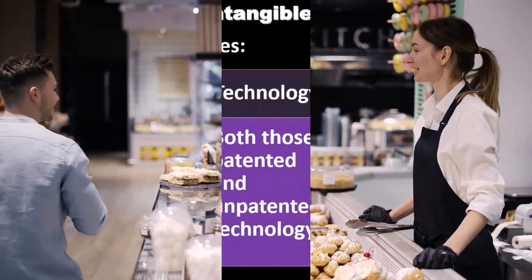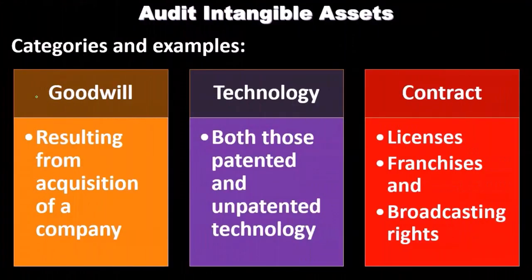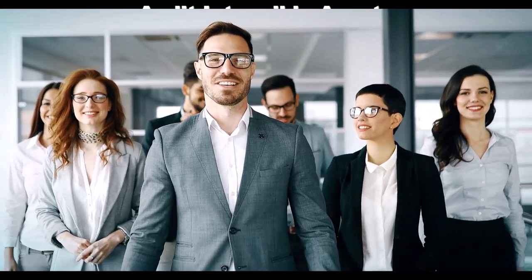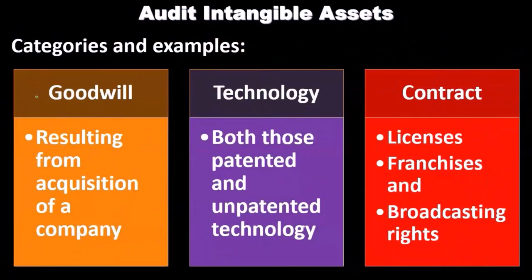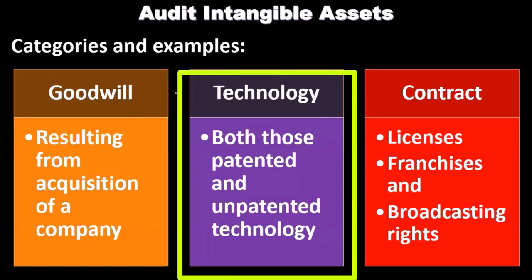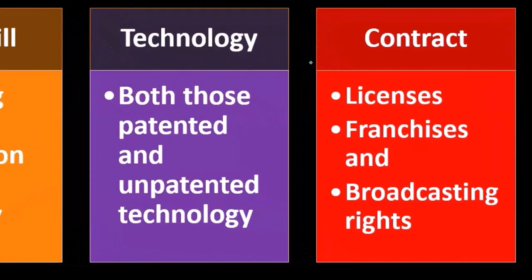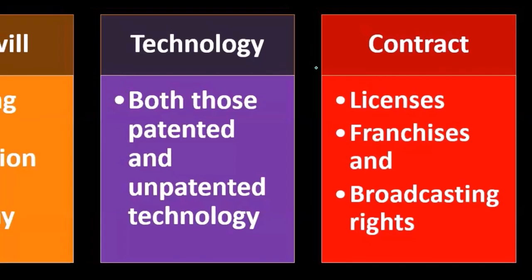The assumption is there's some type of intangible assets, such as the brand name of the company, and that would be the result of goodwill. Goodwill will typically be recorded only when there's a purchase-type transaction, and we will have to somehow value that goodwill if it's on the financial statements. Technology — both patented and unpatented — as well as contracts like licenses, franchises, and broadcasting rights are also intangible asset categories.